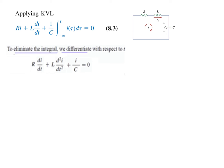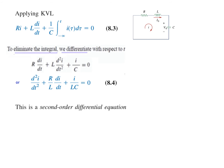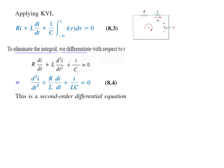After differentiating, R·di/dt becomes the first term, the second term becomes the double differential L·d²i/dt², and the integral and differential cancel each other leaving i/C. Rearranging and dividing by L gives us the second-order differential equation, as discussed earlier, where the highest power is degree 2.